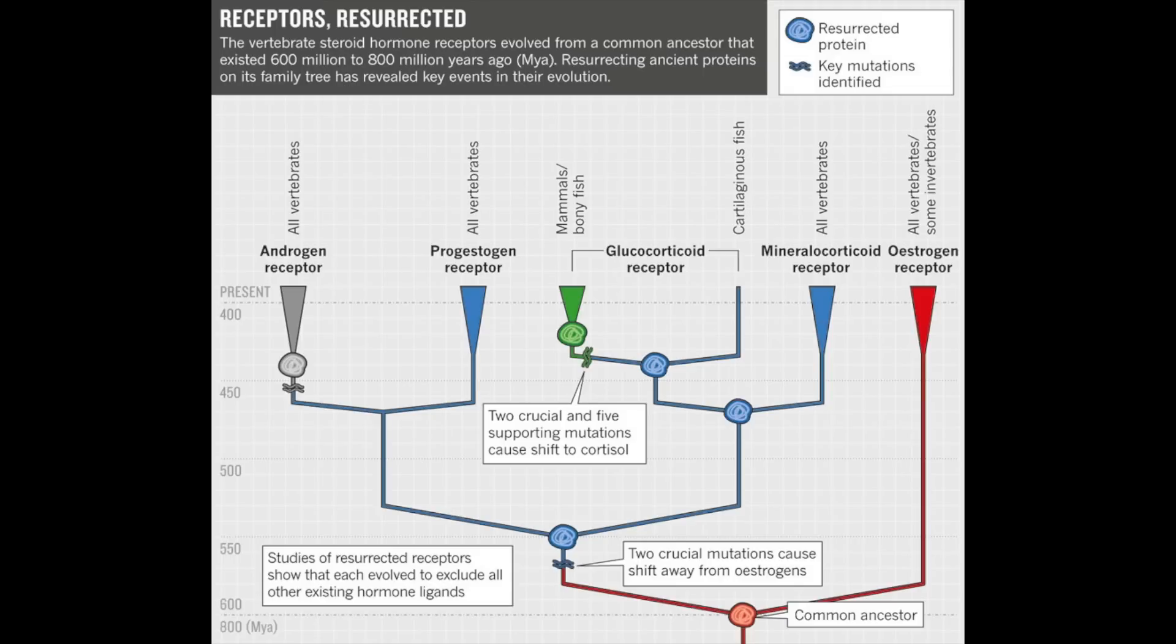And we also have a mineralocorticoid receptor that responds to aldosterone and increases the retention of sodium and excretion of potassium. One is a maintenance-repair signal, the other acts to maintain salt balance. Two rather different functions. But both evolved from an ancestral generic receptor that combined the two functions.